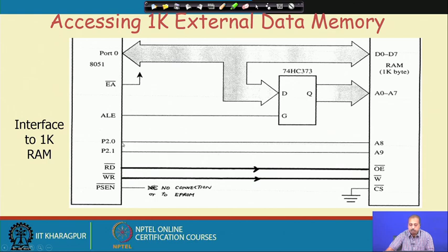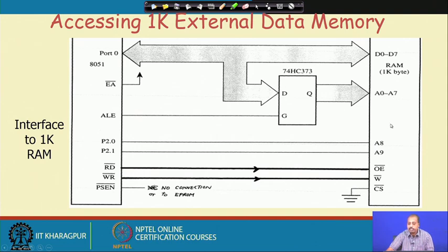The remaining Port 2 bits are not connected, which may lead to address folding. The read bar line is connected to OE bar (output enable) of the RAM chip, and the write bar line is connected to the write pin of the RAM chip. No additional decoding is done — the CS bar pin is grounded so the RAM is always enabled. Whenever the address is put on the address bus and read bar or write bar is asserted, the content of the memory cell will be available on the data bus to be read by Port 0.